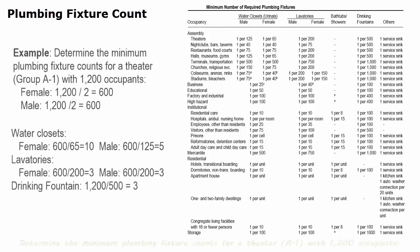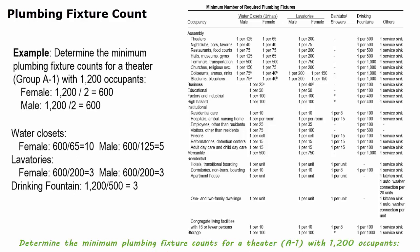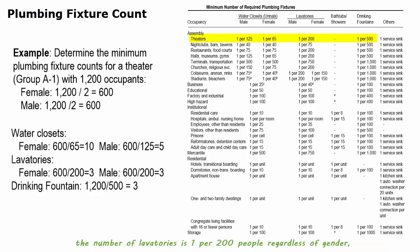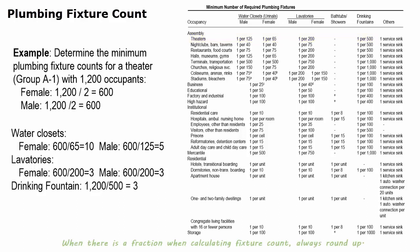Here is an example: determine the minimum plumbing fixture counts for a theater (Group A1) with 1,200 occupants. Assuming 50% female and 50% male, the occupancy load is 600 people per gender. For theaters, the number of water closets is 1 per 125 males and 1 per 65 females. The number of lavatories is 1 per 200 people regardless of gender, and the number of drinking fountains is 1 per 500 people regardless of gender. When there is a fraction when calculating fixture count, always round up.